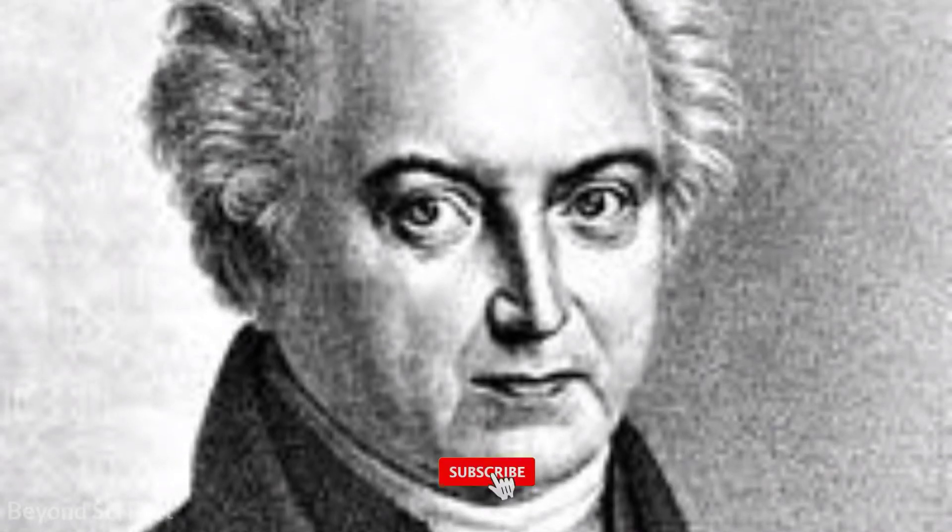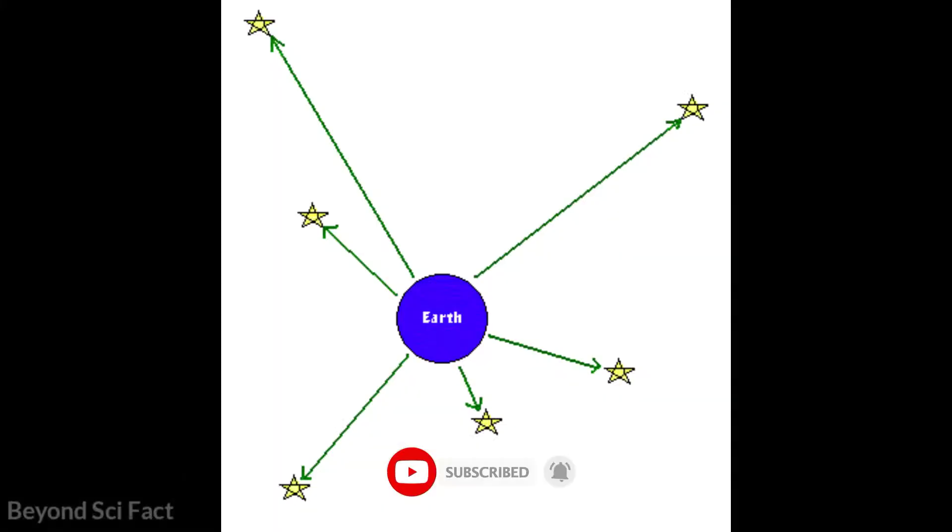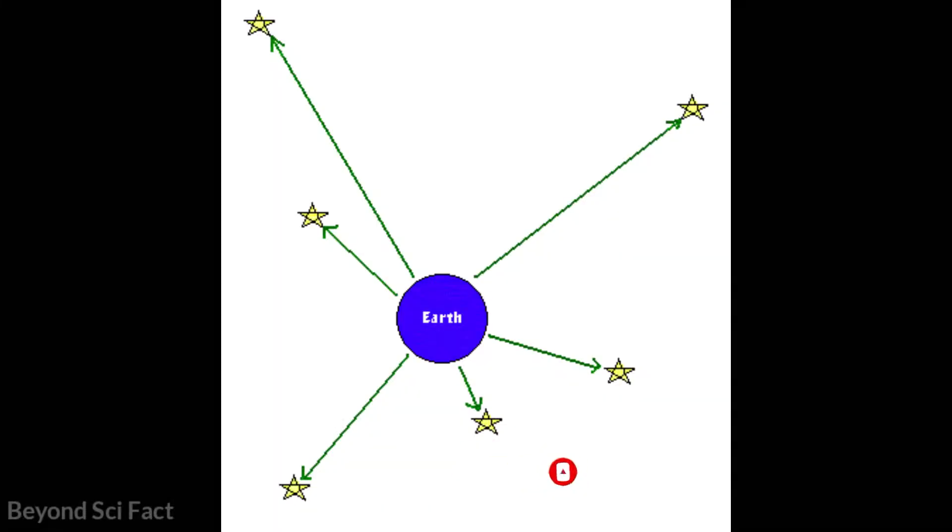With this concept, Olbers' paradox can be explained, which argues about why we see the night sky dark even though we have an infinite number of stars. I've already made a video on this if you want to know more.